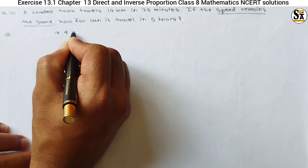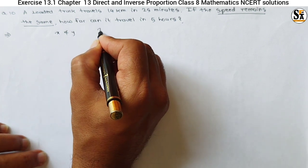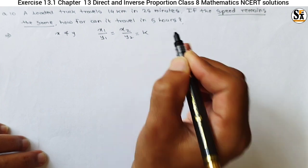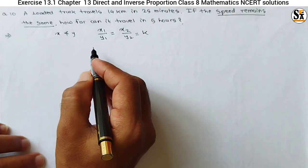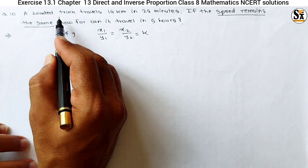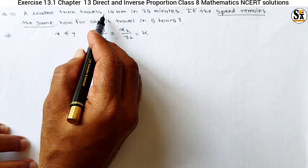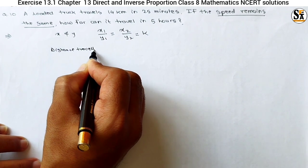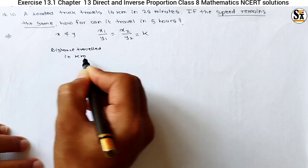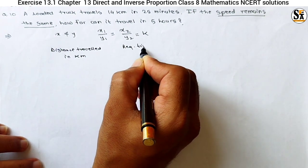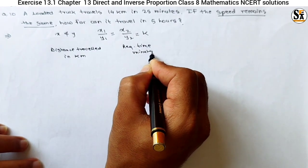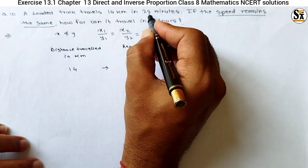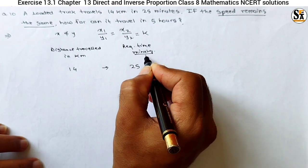For direct proportion, if x and y are two variables, both are set to direct proportion only if the ratio of different values of x to the different values of y is constant. We will put a table: distance traveled in kilometers as x, and required time in minutes as y. What is given? The truck travels 14 kilometers in 25 minutes, so x1 is 14 and y1 is 25.